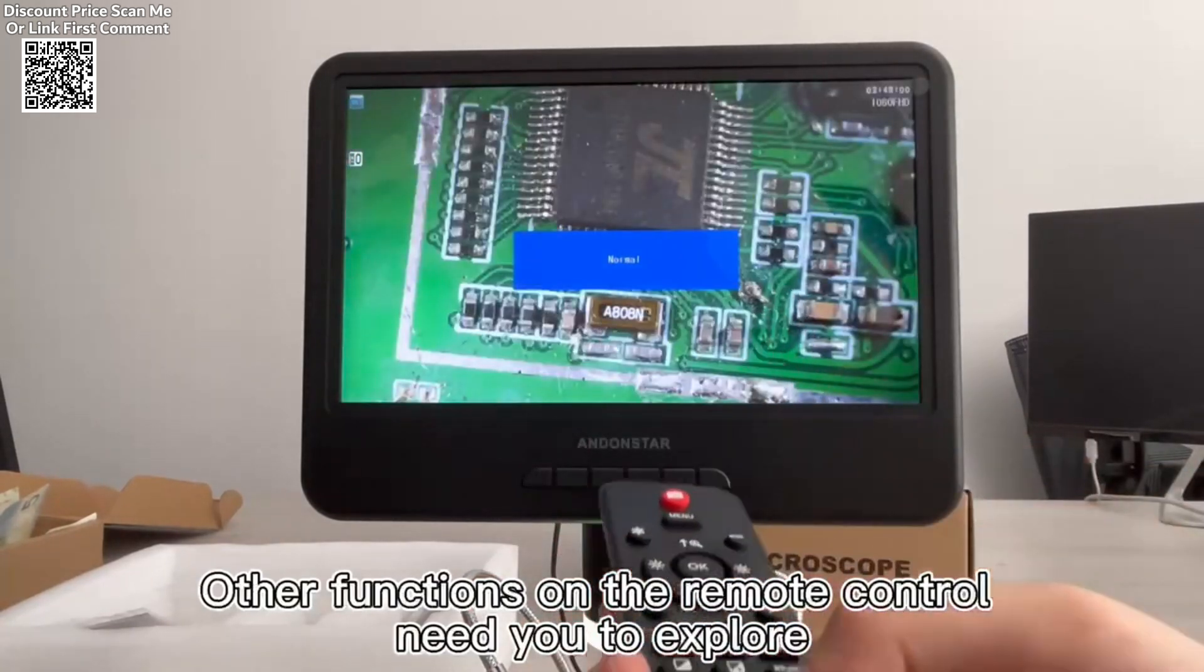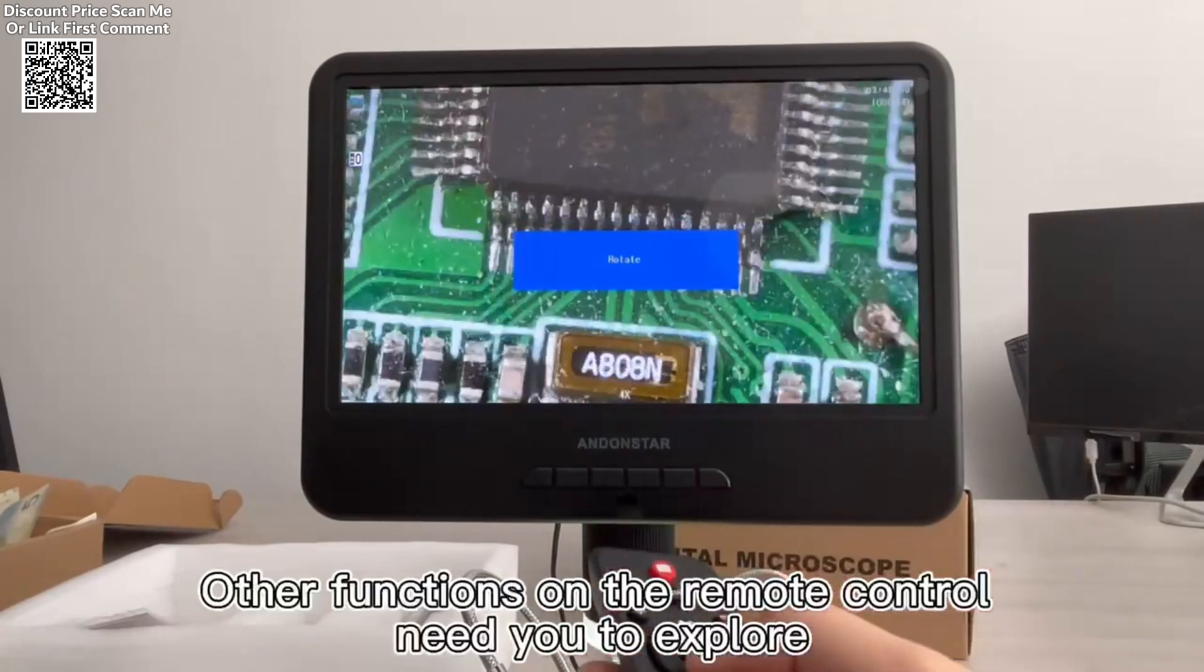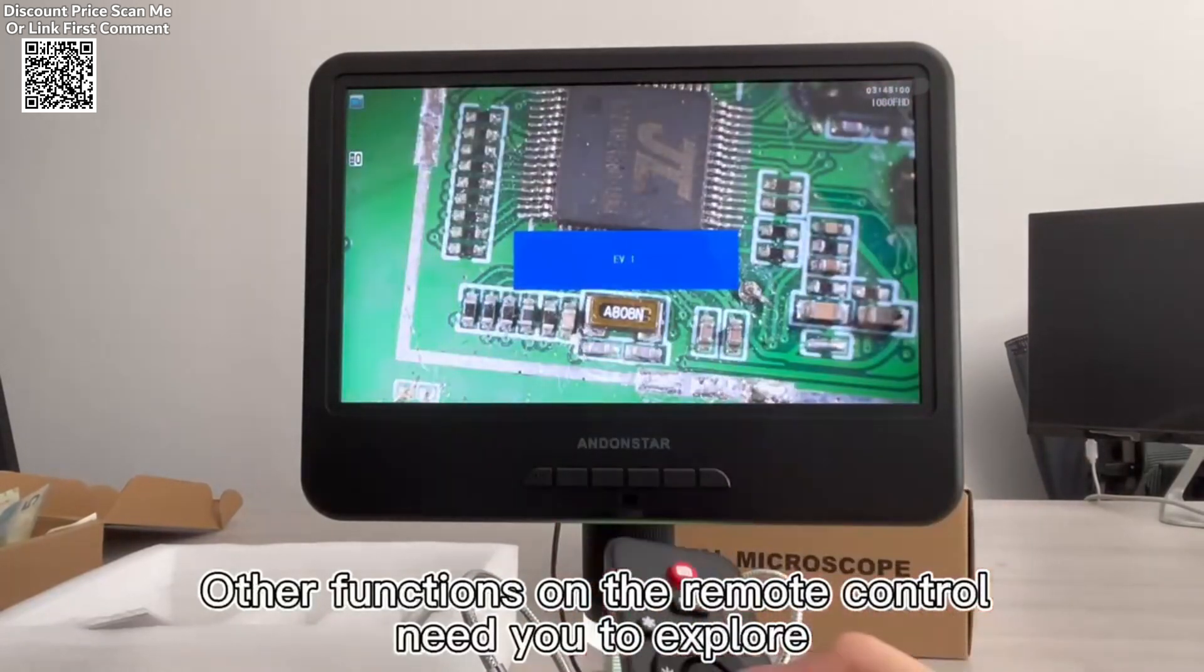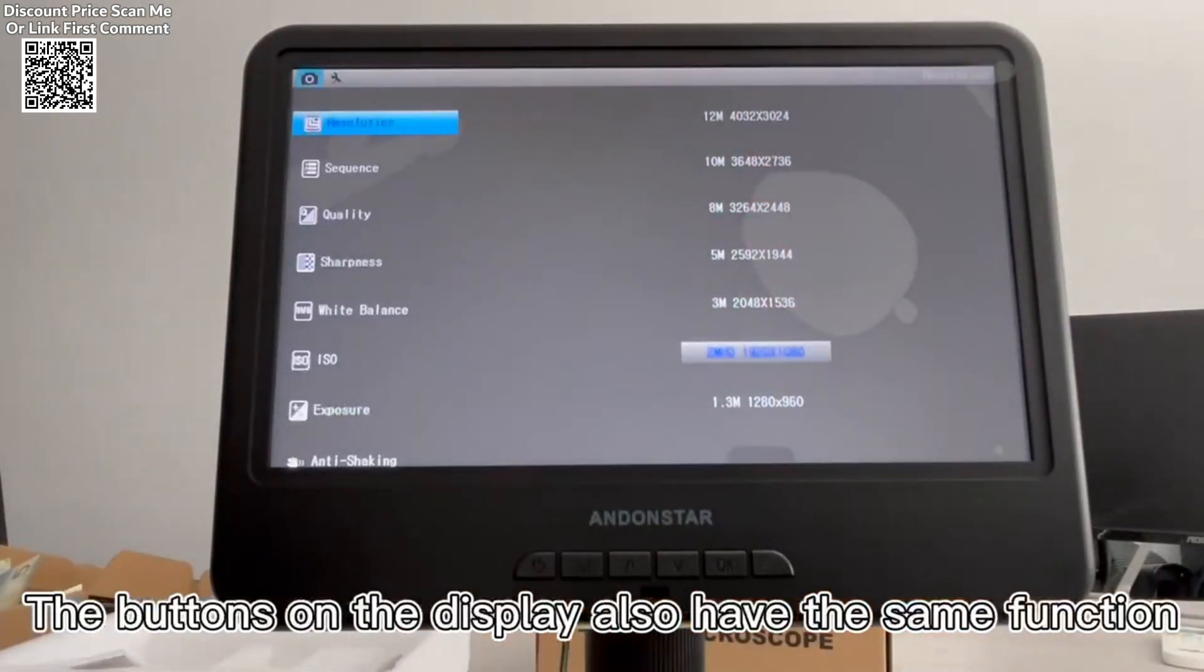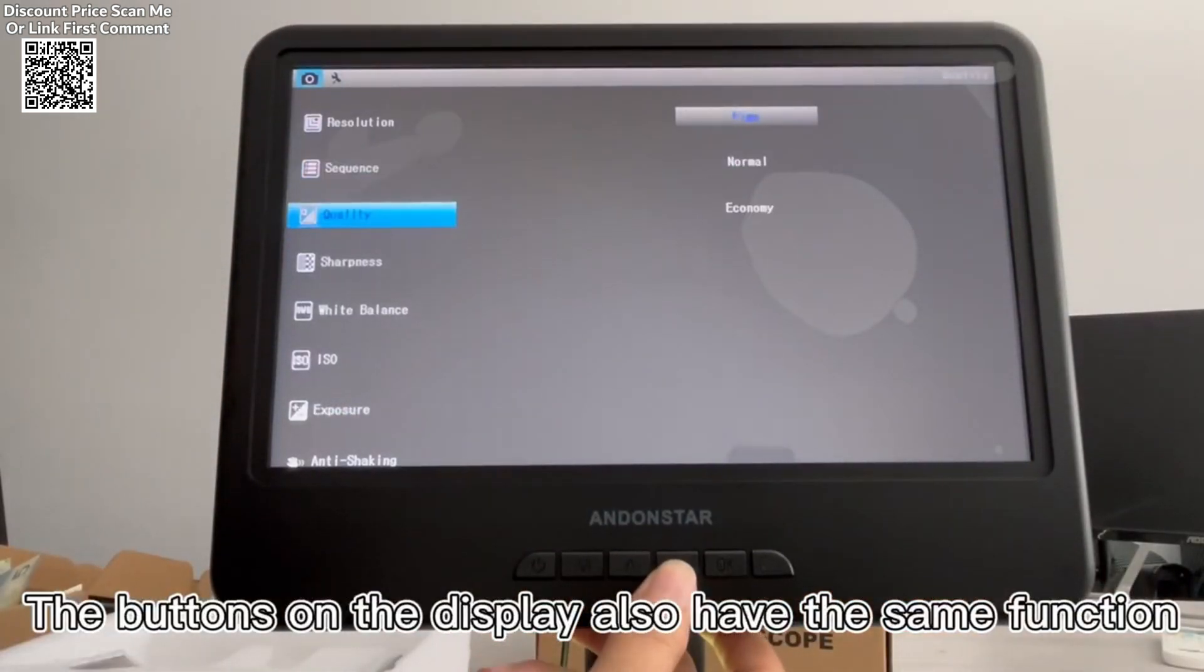The dimmer cable included in the package allows for brightness adjustments, giving users control over lighting intensity to suit different tasks and environments. This ensures that the working area is consistently illuminated for accurate inspection.